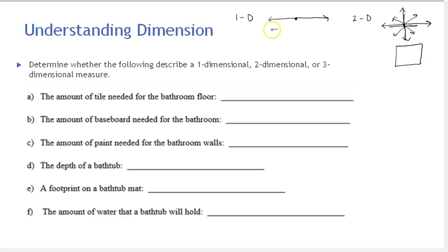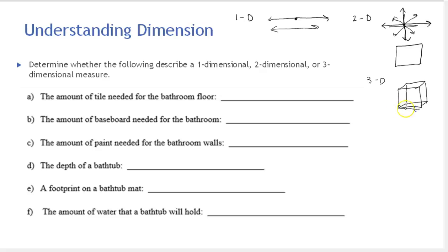Three dimensions is the world we live in — I'm going to draw a cube for this. Think of a plane: if the plane is on the runway, it can travel in one direction or the other on the ground, but it can also fly upwards, and once up it can fly downwards. That would be three dimensions.